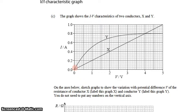In this question, we have a graph of two different conductors, X and Y, and we have the V-I characteristic, or the I-V characteristic for the two conductors.